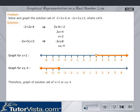Therefore, the graph of solution set of x > 2 or x ≤ -4 is equal to the graph of points which belong to x > 2 or x ≤ -4 or both.